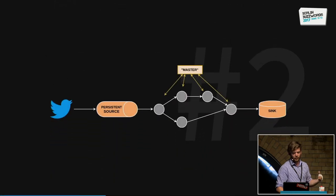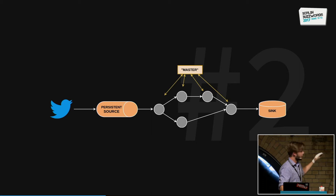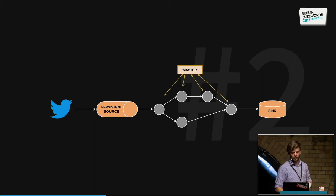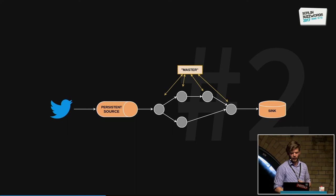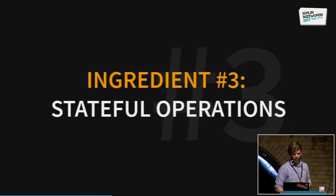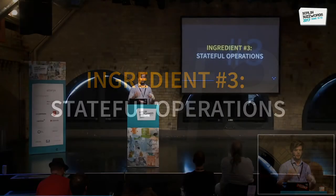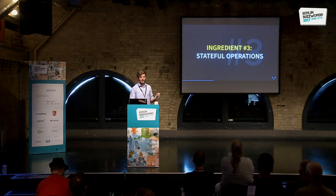So what your application looks like then is: you have something that reads data from Twitter that's very fault tolerant, then you have it in the source. When your streaming application crashes, you can re-read the data from your source. And in the end, you put it in some output.